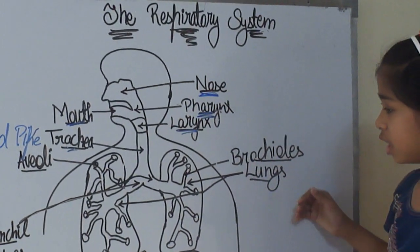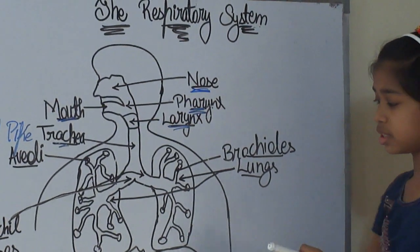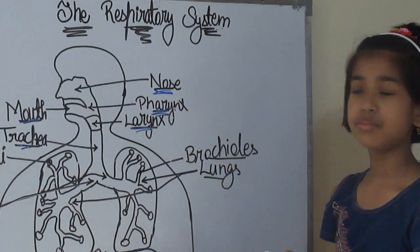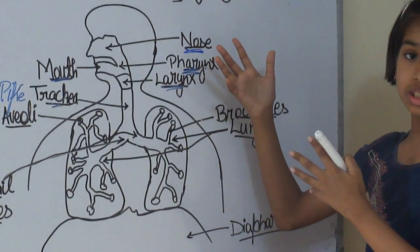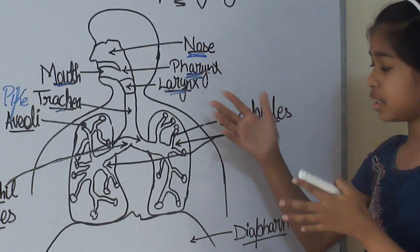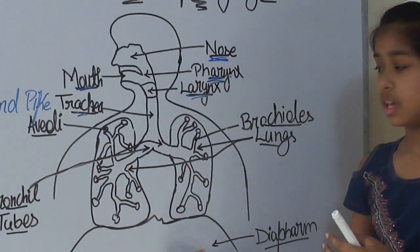Now, here we have a diaphragm also. What does this diaphragm do? It is basically a muscle which, when our brain tells the diaphragm to go down, it goes down.